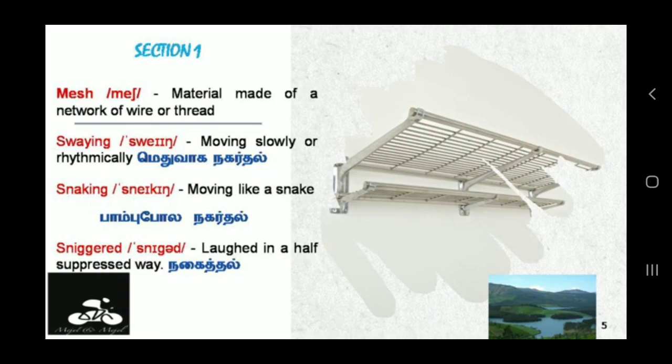Before that, let us all learn the glossary from section 1. Mesh — material made of a network of wire or thread. Mesh is a kind of rack, which is used to keep things on it.